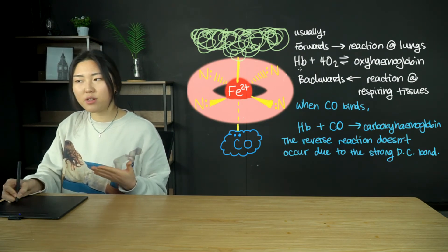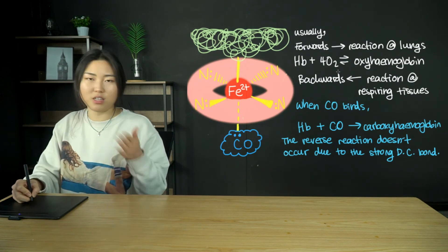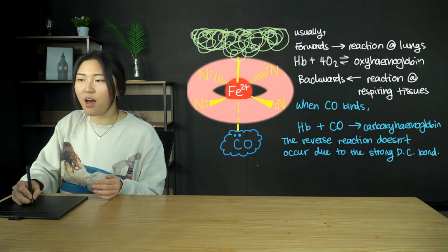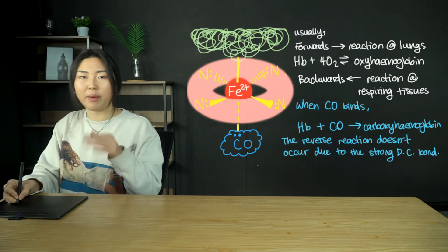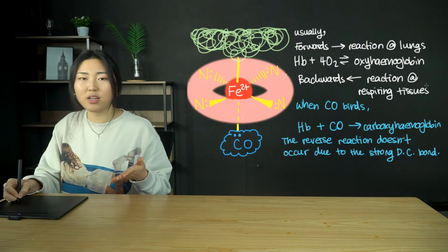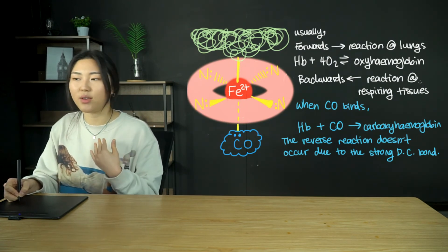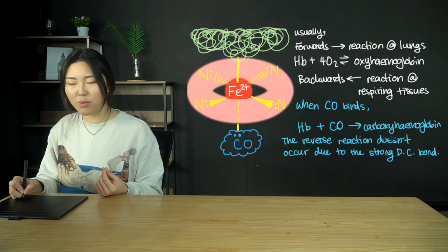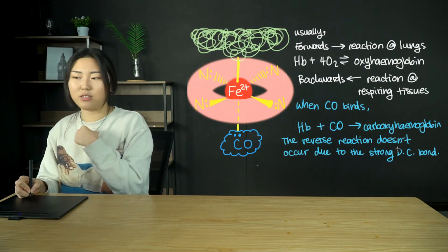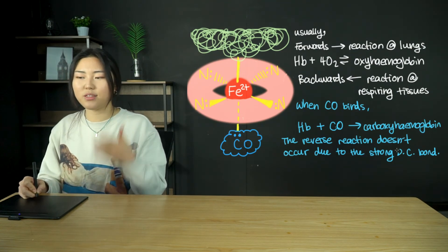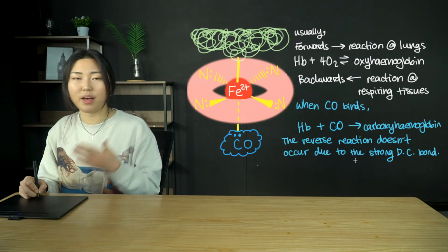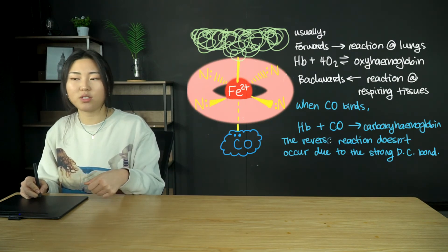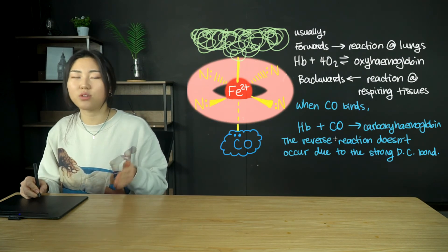Normally, there is a reversible reaction where hemoglobin binds with four oxygen molecules (since hemoglobin has four heme groups) to form oxyhemoglobin. The forward reaction occurs in the lungs picking up oxygen; the backward reaction occurs in respiring tissues releasing oxygen. But when CO binds, it forms carboxyhemoglobin, and the reverse reaction does not occur due to the strong dative covalent bond. The hemoglobin is no longer available to transport oxygen to respiring tissues, which is why carbon monoxide is so toxic.